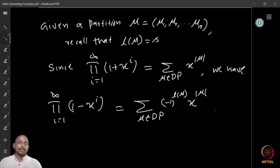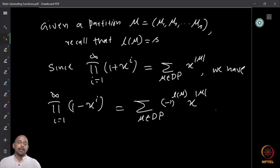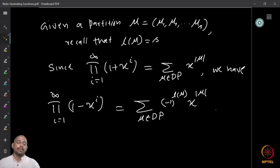Now, ∏_{i=1}^{∞}(1 + x^i) equals by definition the sum over μ in DP of x^{|μ|}. When I change the sign from (1 + x^i) to (1 − x^i), I get the product ∏_{i=1}^{∞}(1 − x^i), and I claim this equals the sum over μ in DP of (−1)^{l(μ)} x^{|μ|}.